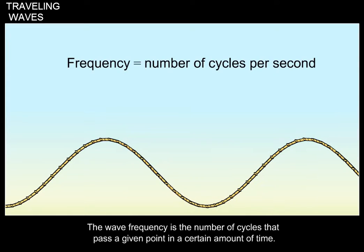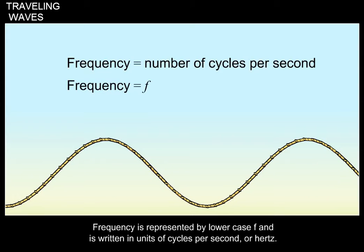The wave frequency is the number of cycles that pass a given point in a certain amount of time. Frequency is represented by lowercase f and is written in units of cycles per second, or hertz.